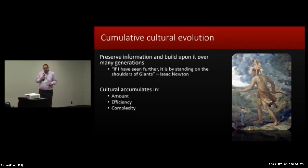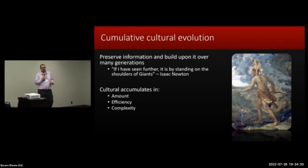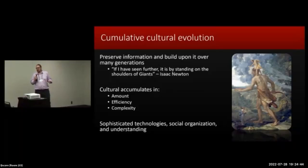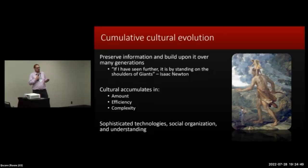You can see this cultural accumulation in humans in a variety of measures — in the amount of cultural traits, in the efficiency of cultural traits, and in the complexity of cultural traits. What this process ultimately results in is sophisticated technologies, forms of social organization, and understanding — for example, scientific theories that far exceed what any single generation of individuals could produce on their own.